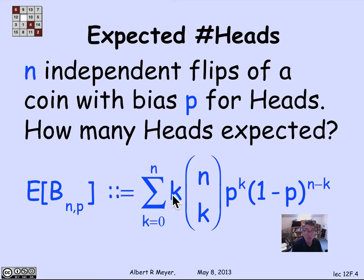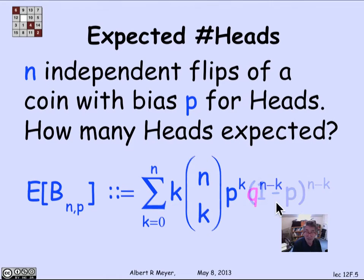of the probability of getting k heads. And this formula here is the probability of getting k heads, which we've worked out previously: n choose k times p^k (1-p)^(n-k). Well, let's introduce an abbreviation, a standard abbreviation. Let's replace 1 minus p by q.